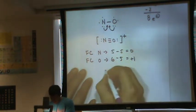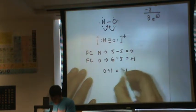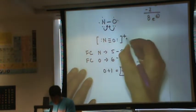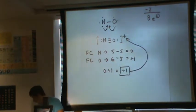So if I add these two charges up, zero plus one equals plus one. This better be the same as the overall charge of the molecule, which it is. So you'll notice the structure is correct.